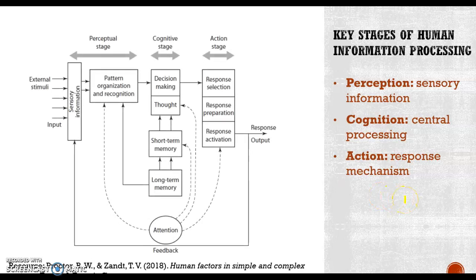Let's take a look at this figure showing the three stages. The first stage is the perceptual stage, which means perception — how we get information. We receive sensory information from the outside environment. The second part is the cognitive stage, which involves decision-making — how we act on that input. The final stage is the action stage, which is about how we provide responses back to the environment.